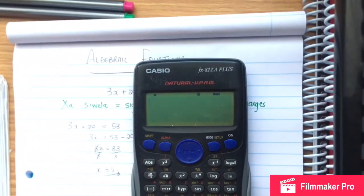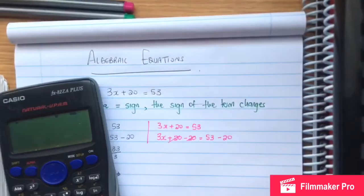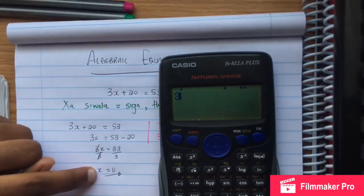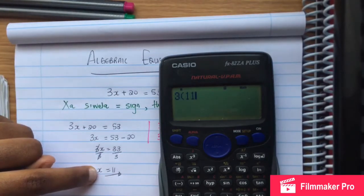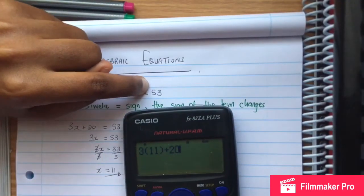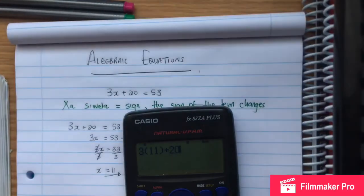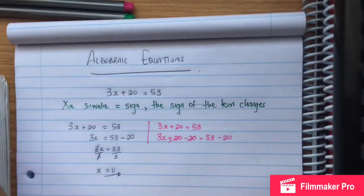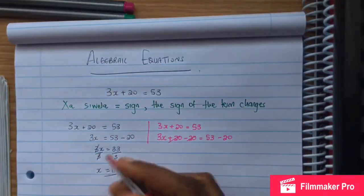We substitute x equals 11. Then 3 times 11 plus 20 should equal the original number 53. We see that our answer is correct, it equals 53. So our answer is correct.